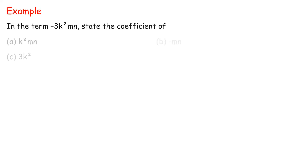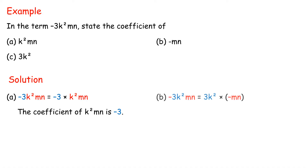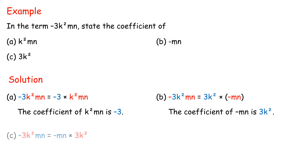Example: In the term negative 3K squared MN, state the coefficient of each part. A: The coefficient of K squared MN is negative 3. B: Negative 3K squared MN equals 3K squared times negative MN; the coefficient of negative MN is 3K squared. C: Negative 3K squared MN equals negative MN times 3K squared; the coefficient of 3K squared is negative MN.